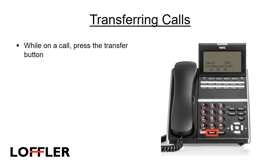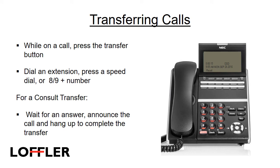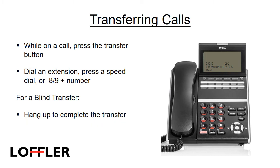To transfer a call from your extension to another number, press the transfer button. Dial an extension, press the speed dial, or dial the trunk access code — 8 or 9 — and then the number. For a consult transfer, wait for an answer, announce the call, and hang up to complete the transfer. For a blind transfer, just hang up to complete the transfer. To transfer to someone else's voicemail, dial the extension followed by 8.